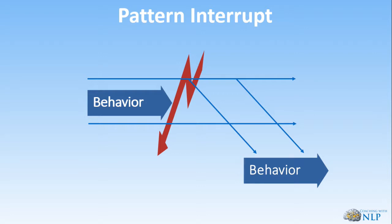Think of the old cowboy movies where they wanted to rob the train. While some of the guys were jumping on the train up ahead, somebody would take one of those big metal levers and pull it across to actually change the track so that the train goes down a different track. That's what we want to do with a pattern interrupt — we want to stop that behavior and stop that direction in which the person is going so that we can change the behavior.